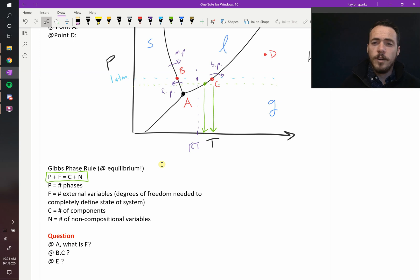An important concept when you talk about phase diagrams is Gibbs phase rule, which works at equilibrium. The equation for it is as follows: P plus F equals C plus N. So what is P, F, C, and N?